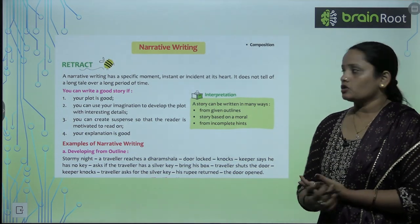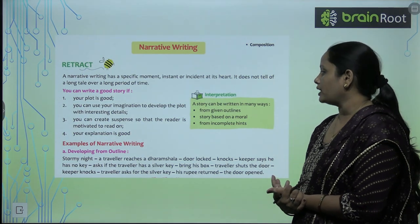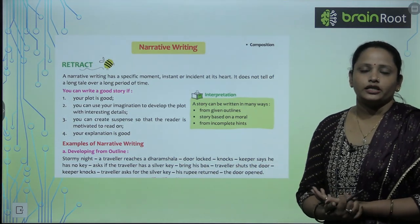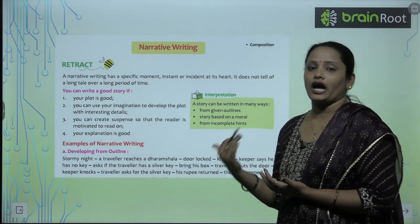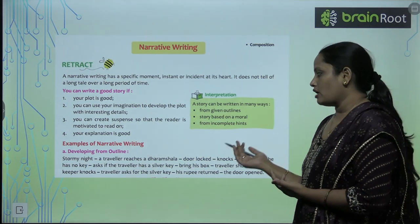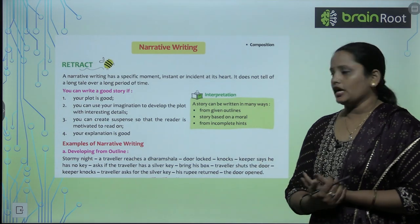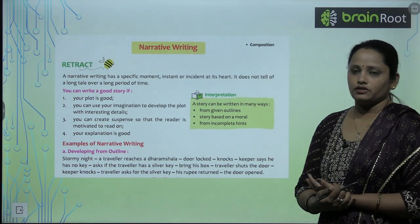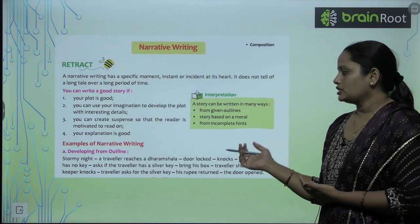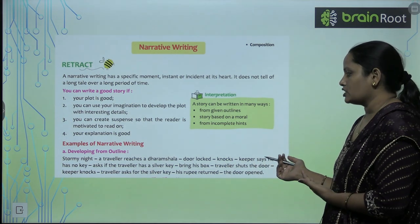Examples of narrative writing. The first is developing a story from an outline. Here are some outlines given: a stormy night — a traveller reached Dharmshala, the door was locked, he knocks, the keeper says he has no key, asks if the traveller has a silver key, bring his box, traveller shuts the door, keeper knocks, traveller asks for the silver key, rupees returned, door opened. This is the story of the silver key.